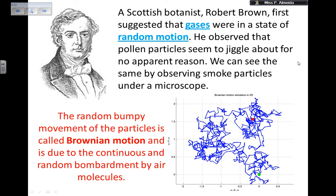Robert Brown figured out that the movement of gases had to be random, because the effects he could observe showed particles moving in a random state. This random, bumpy movement of particles is called Brownian motion and is due to the continuous and random bombardment by air molecules.